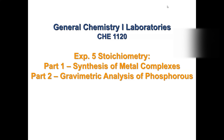With Experiment 5, we're already a little over halfway through the semester, so we're on the downward slope. Experiment 5 consists of two parts: synthesis of a metal complex — in particular a transition metal complex — and gravimetric analysis of phosphorus. And even in the gravimetric analysis of phosphorus, we form a metal complex as well.